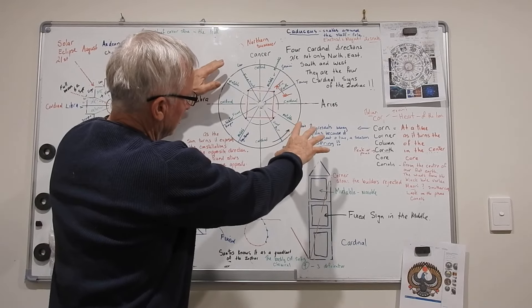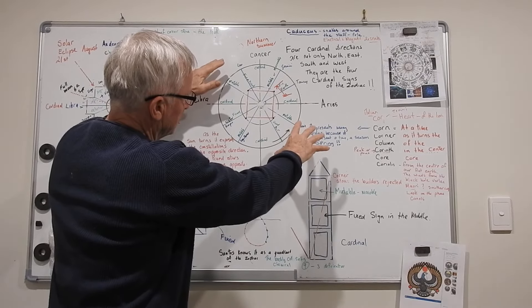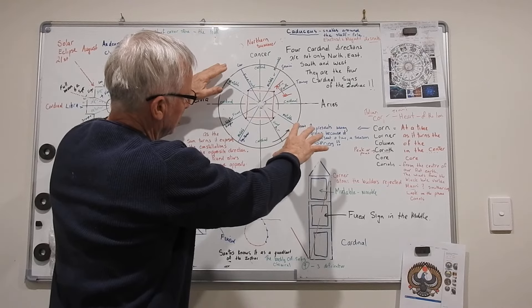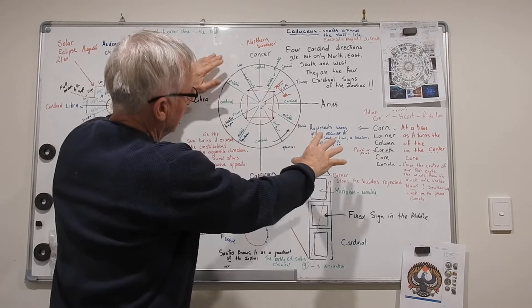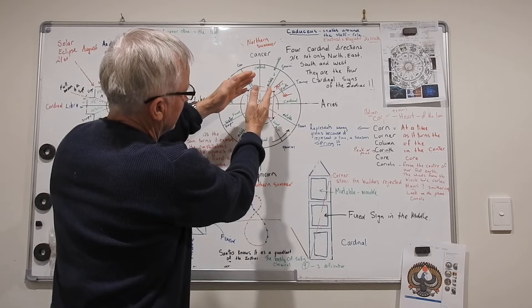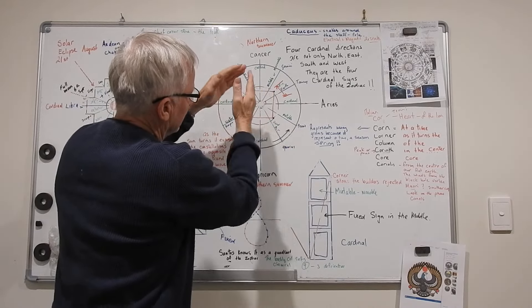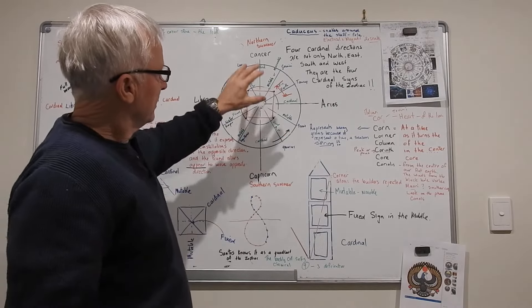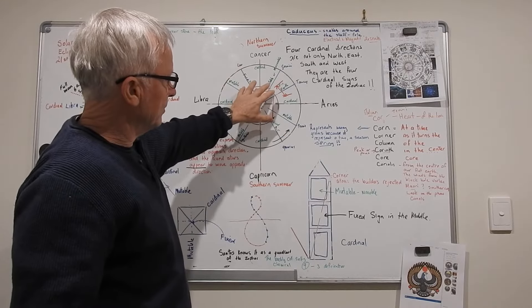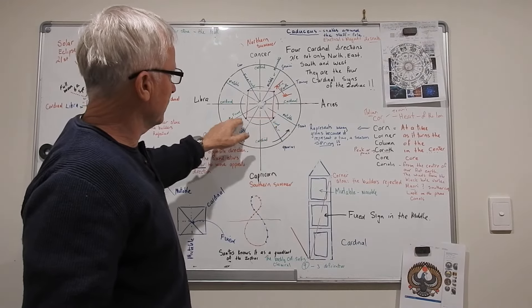That's the southern summer. Don't focus too much on the sun, that's the magnetic field. Take your hand off, pops back up again. This is what it's doing over the year, popping in and out. It's not the sun, it's the magnetic field.